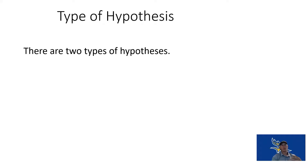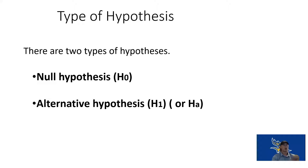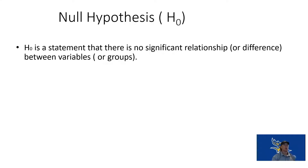There are two different types of hypotheses. We have the null and the alternative hypothesis, or our H0 and H1. A null hypothesis states that there is no significant relationship or no significant difference between variables or between groups. This is the statement that there is not.